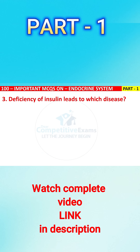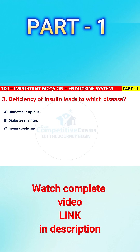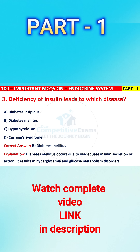Question 3. Deficiency of insulin leads to which disease? Your options are: diabetes insipidus, diabetes mellitus, hypothyroidism, or Cushing syndrome. The correct answer is B, i.e., diabetes mellitus. Diabetes mellitus occurs due to inadequate insulin secretion or action. It results in hyperglycemia and glucose metabolism disorders.